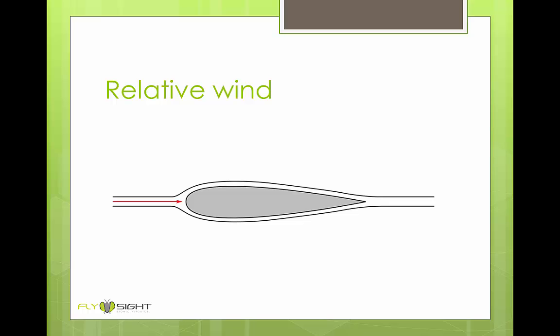The relative wind is the direction of movement of air relative to the airfoil. In this diagram we can see the relative wind, shown by the red arrow, and also a couple of streamlines, showing the flow of air around the airfoil.